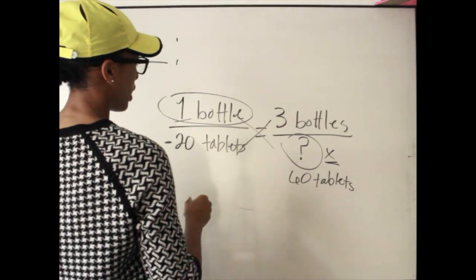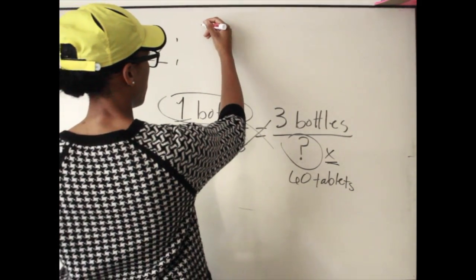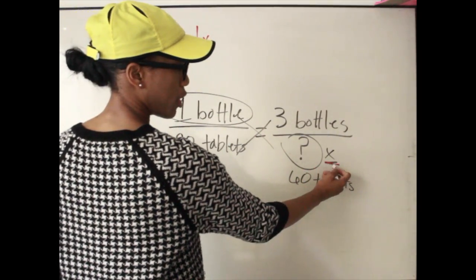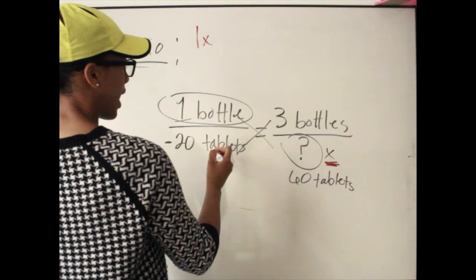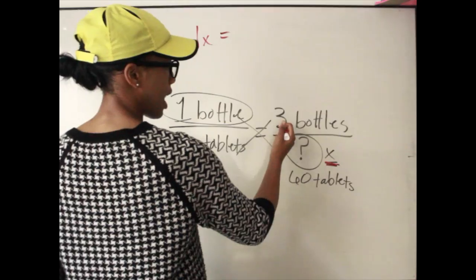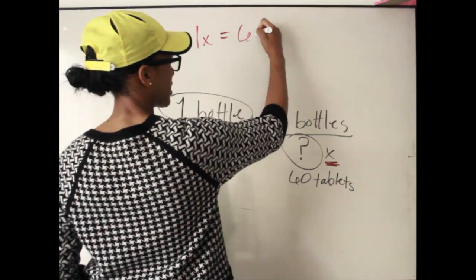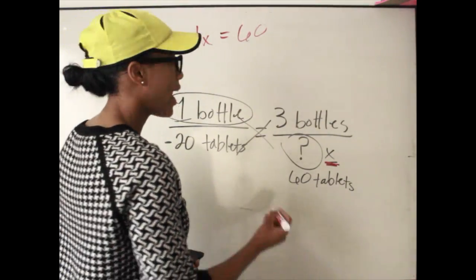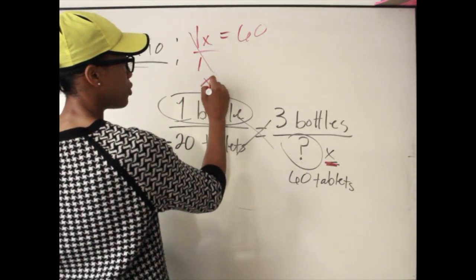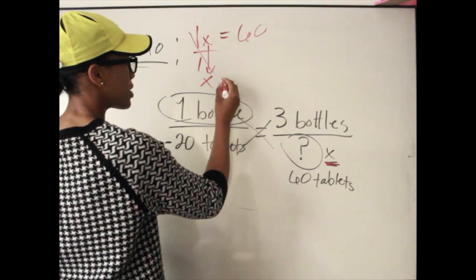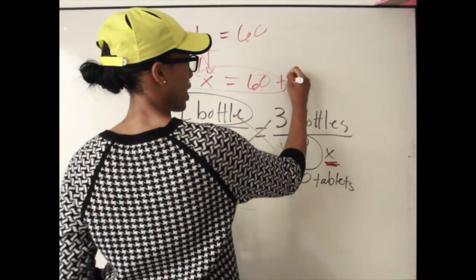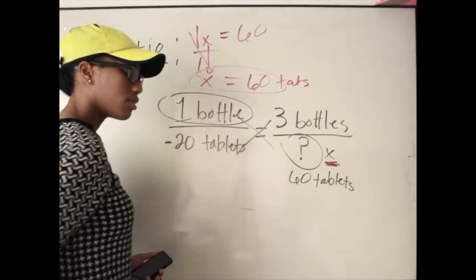Here's what the cross multiplication work looks like. One bottle times x equals 20 times 3, which is 60. You cancel out the 1, which isolates x, and x equals 60 — so you get 60 tablets.